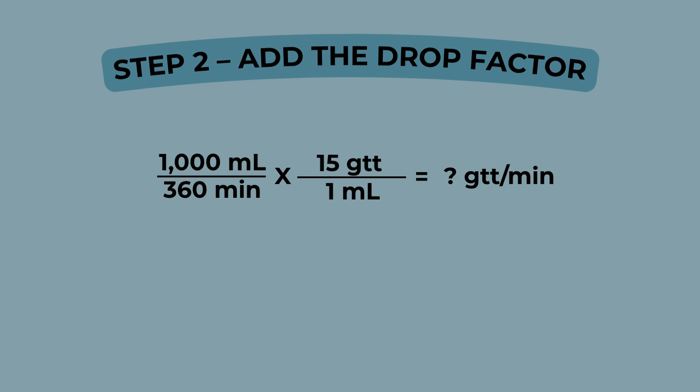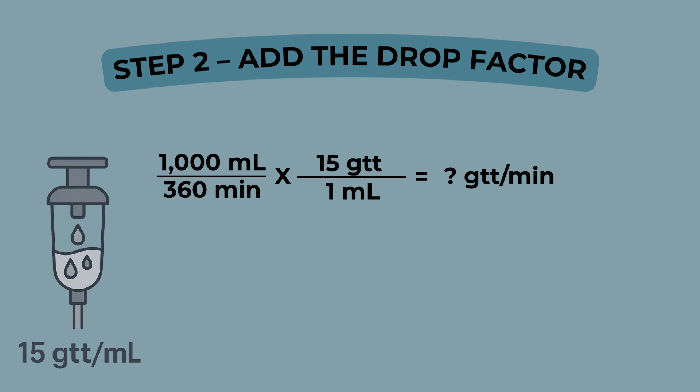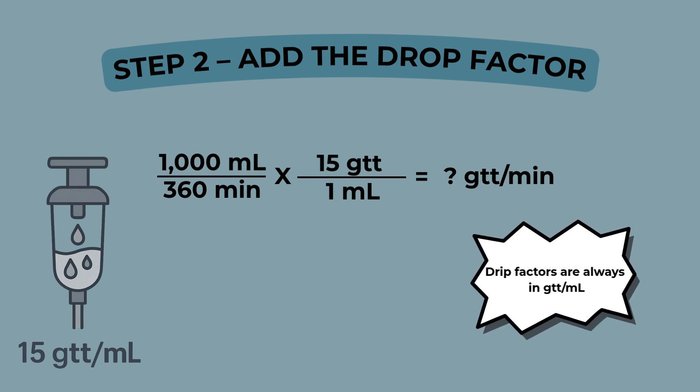Now it's time to add your drop factor. This tubing delivers 15 drops for every one milliliter — that's a macro drip set. The drop factor always goes on top because that's what you want to find: drops per minute. So now your setup looks like this: one thousand milliliters over 360 minutes, times 15 drops over one milliliter. Cancel out the milliliters and what's left is drops per minute, the unit we're solving for.